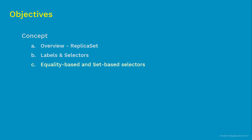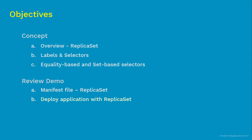Coming to Part 2, we will review the demo we are about to perform on a live Kubernetes cluster in advance. In this review demo, we will show you what goes inside the ReplicaSet manifest file, how to deploy the application using ReplicaSet, how to display and validate the objects created, test ReplicaSet with some use cases, and finally clean up what we created.